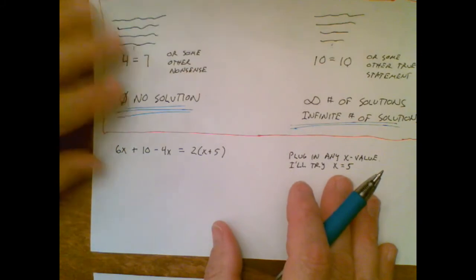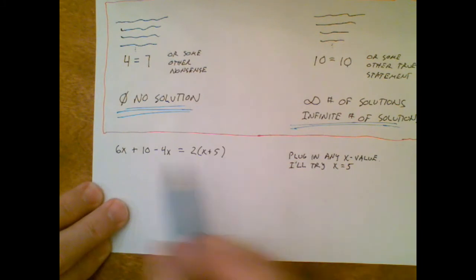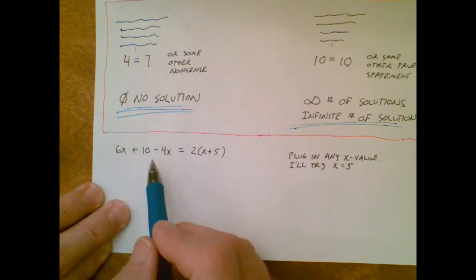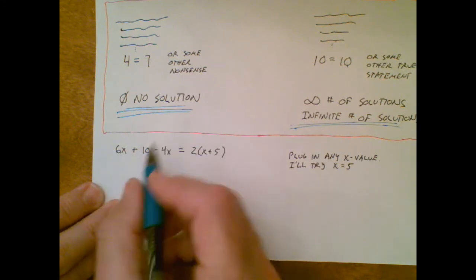Let's do one last problem. I see on the left side a 6x and a 4x. They're on the same side of the equation. If they're on the same side of the equation I can combine them. 6x minus 4x is 2x. Over here I can distribute that 2.